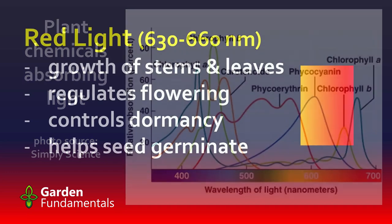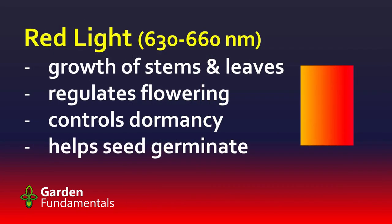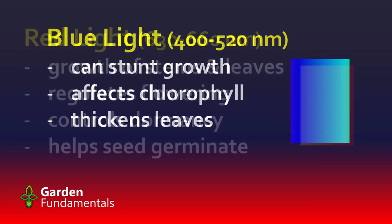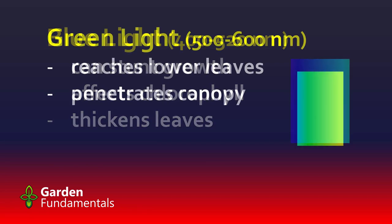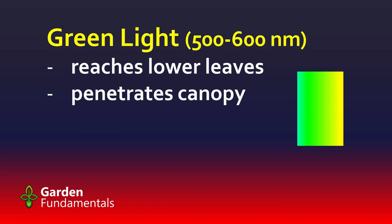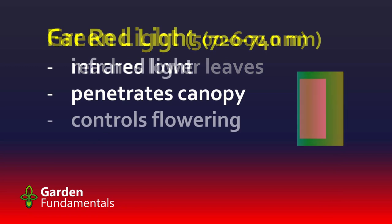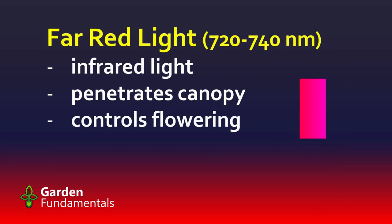NASA has done a lot of work on the light used by plants, and they have determined the following: Red light is essential for the growth of stems and the expansion of leaves. It also regulates flowering, dormancy periods, and seed germination. Blue light needs to be balanced with other colors, since overexposure can stunt the growth of certain plants. Blue light also affects the amount of chlorophyll and the thickness of a leaf. Green light penetrates through thick top canopies to support lower leaves, so it's important for taller plants. Far red light, also called infrared, passes through dense upper canopies and reduces the time a plant needs to flower.